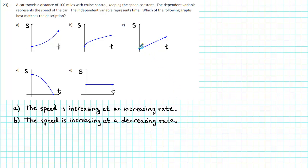For graph C, we see that the speed starts out at zero and is increasing. And the curve is not bending upwards or downwards. It's just a straight line. That indicates that the speed is increasing at a constant rate.